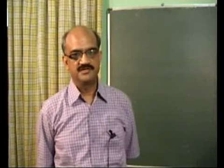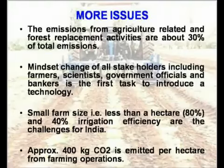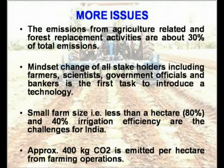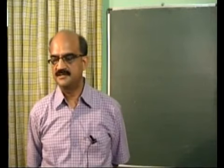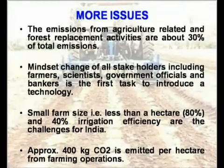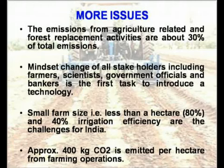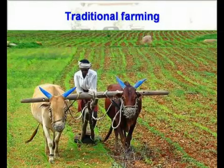One issue is related to emissions. When we use farm power, diesel is consumed, and we replace forests to get land for agriculture. All these activities contribute about 30 percent of total carbon dioxide emissions — meaning 30 percent of total emissions are directly contributed by agriculture. Another challenge is changing the mindset of stakeholders — farmers, scientists, government officials, bankers — for introducing any technology or change in practices.